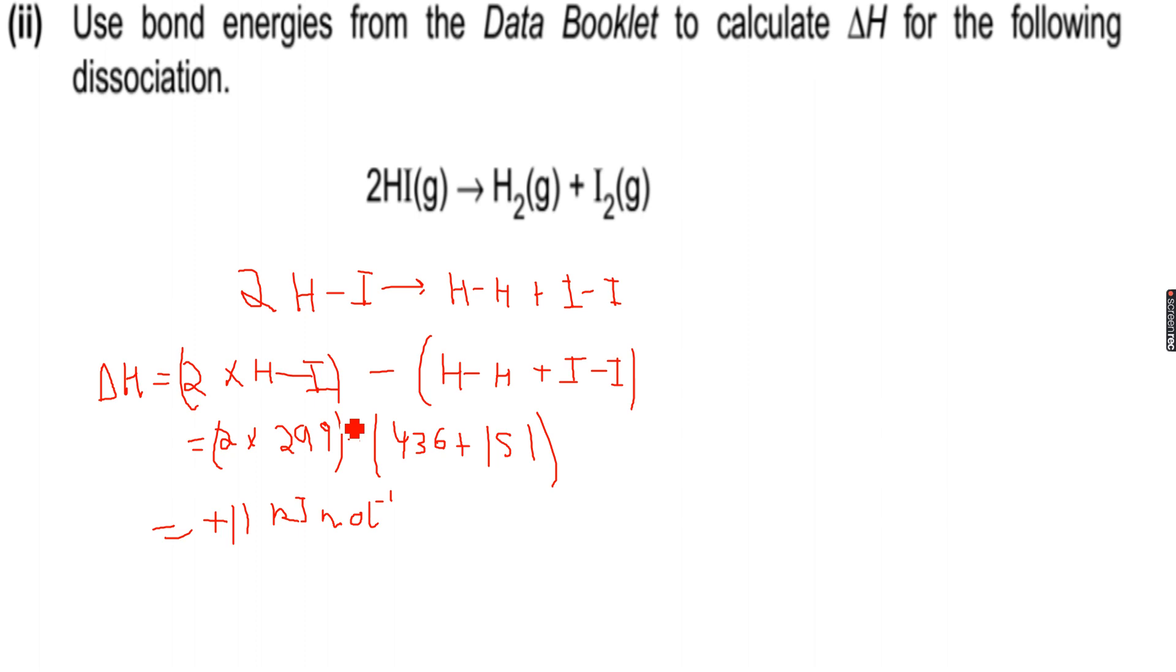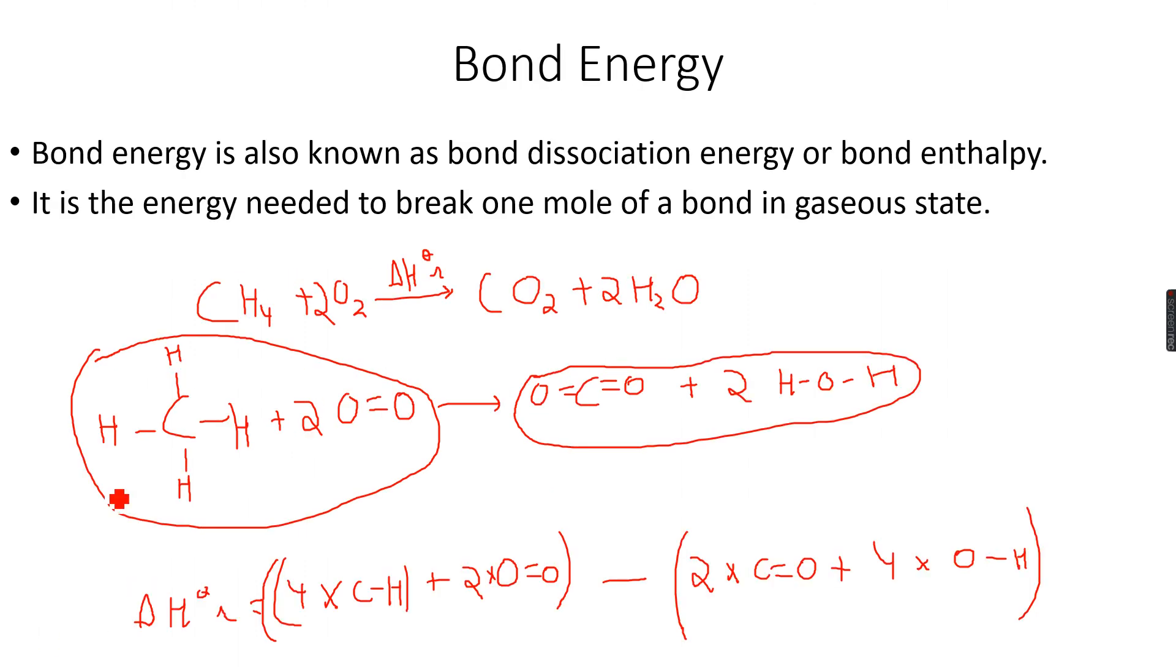They are averaged over several reactions because in all reactions the bond energies are different, or the bond energies of the same bond are slightly different in all reactions. So these bond energies that are given in the data booklet, they are averaged over several reactions, and that's why we get an inaccurate value. You will have to write this sentence which I just said to get the marks for that question.